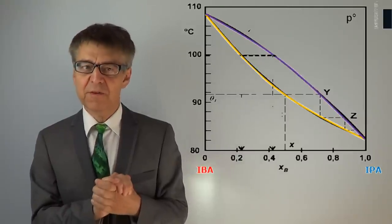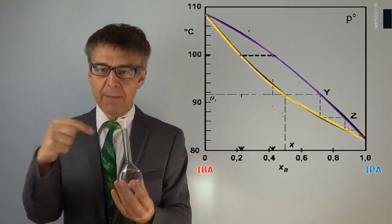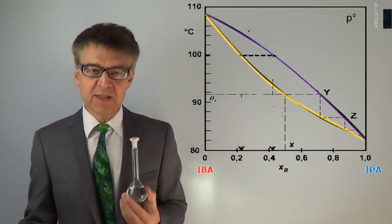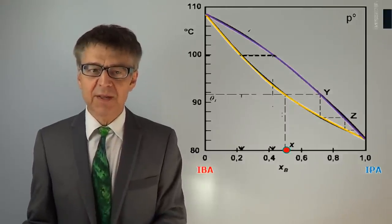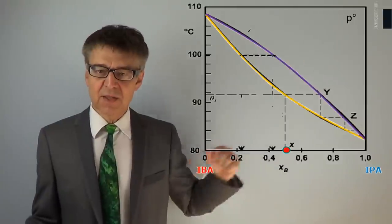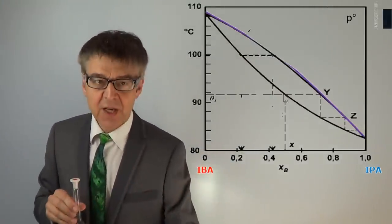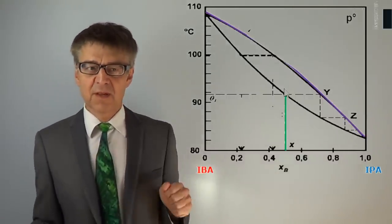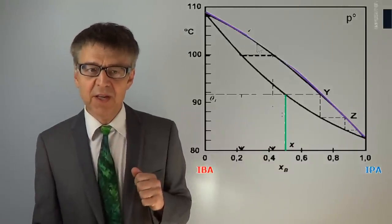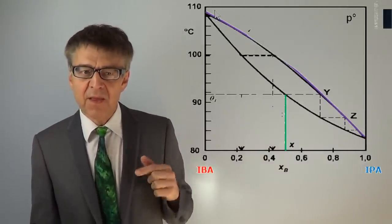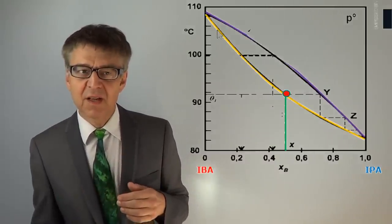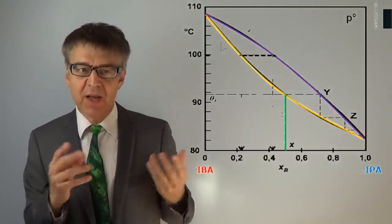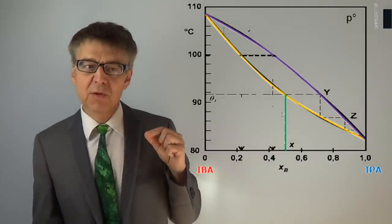We want to discuss heating of a 50-50 mixture using this diagram. If you mix one mole of IPA and one mole of IBA and heat to, say, 80 degrees Celsius, we get a point in the diagram located right here on the abscissa at 0.5. So we have a homogeneous liquid phase. If we heat up the liquid, this means we move up on a vertical in this diagram — a so-called isoplast, marked in green — at about 92 degrees Celsius, the isoplast intersects with the bubble point curve. That is, the mixture begins to boil.